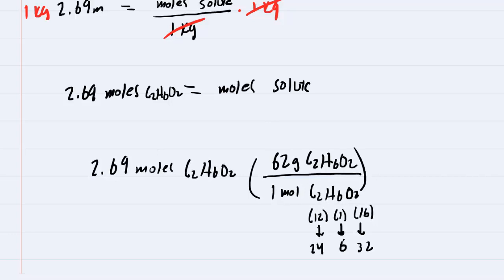So when we multiply these out, the moles are going to cancel out, leaving us with just grams. And therefore, the correct answer to the number of grams is approximately 167 grams of C2H6O2.